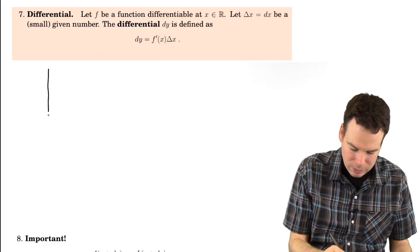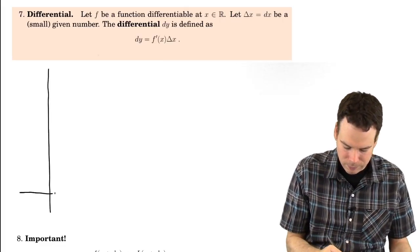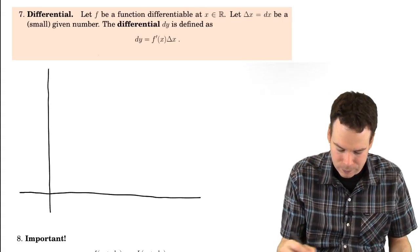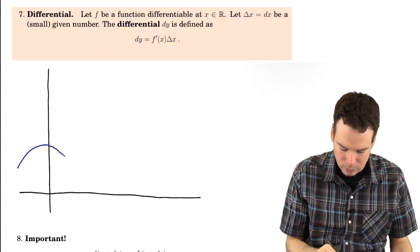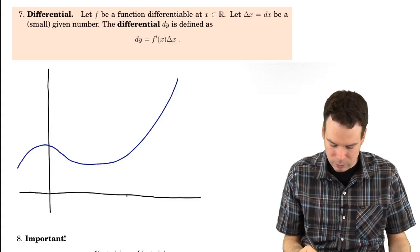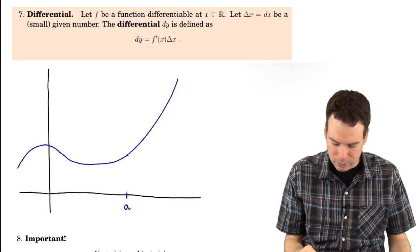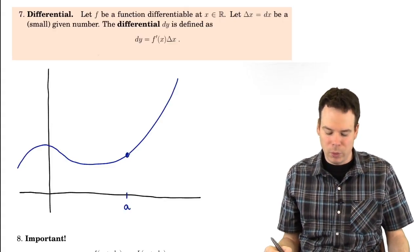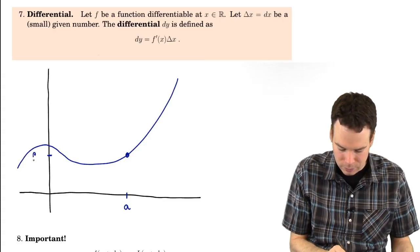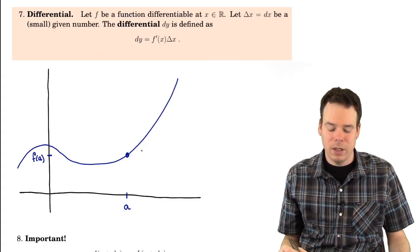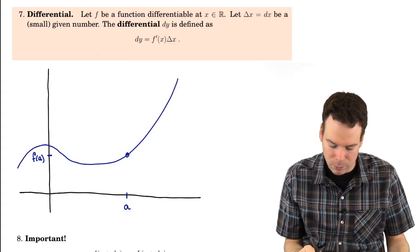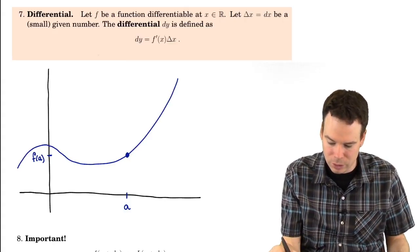Let's look at what this means graphically. What is the differential — what's it trying to capture? We have our function, and we've got some information about some point a. This looks very similar to what we did with linear approximation — we're just going to focus on a particular part of that discussion.